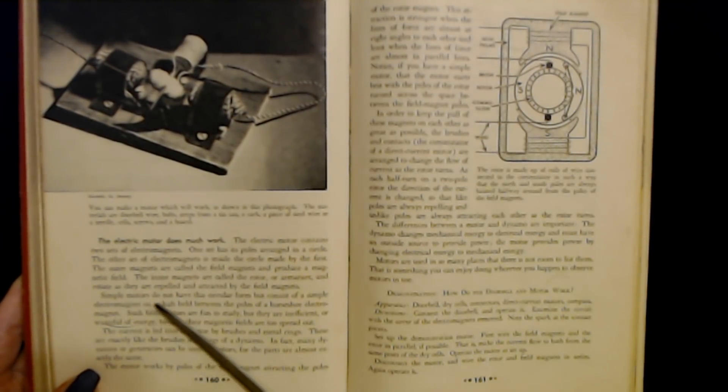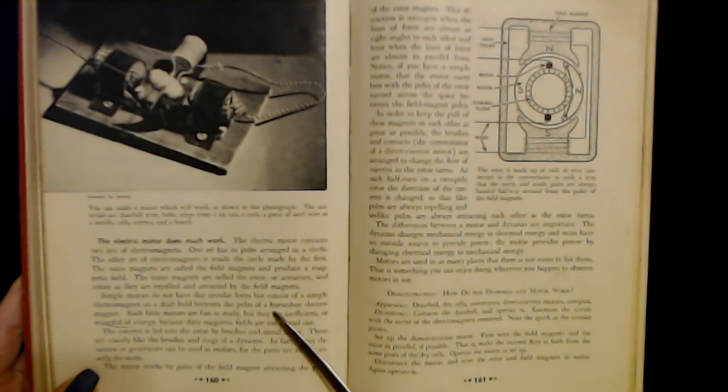Simple motors do not have this circular form but consist of a simple electromagnet on a shaft held between the poles of a horseshoe electromagnet. Such little motors are fun to study, but they are inefficient or wasteful of energy because their magnetic fields are too spread out.